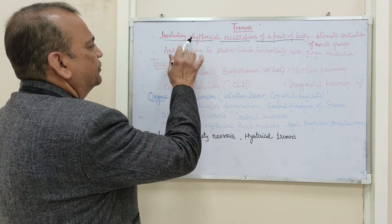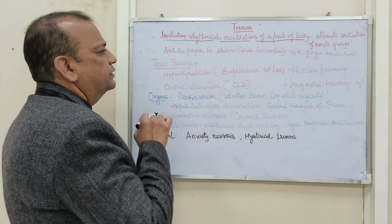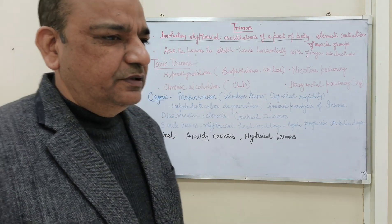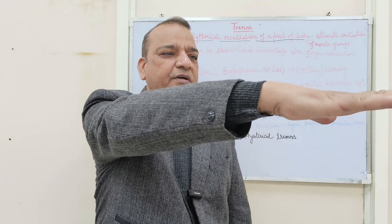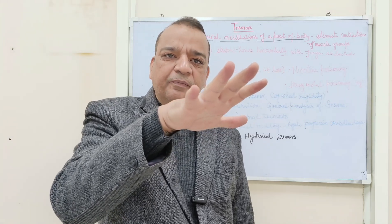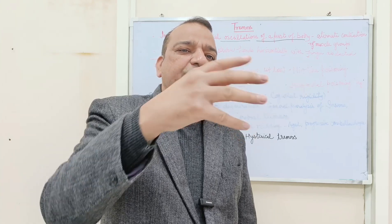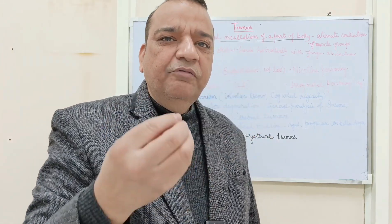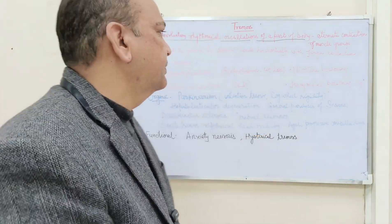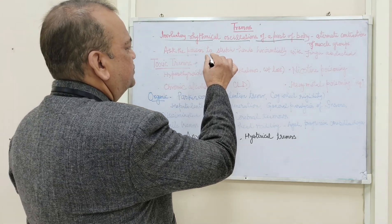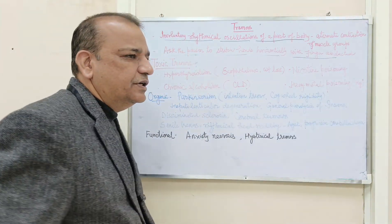Because in the tremor there are involuntary rhythmical oscillations of a part of the body. So, how do you know that a person has tremors? Ask the person to stretch the hand horizontally and keep the fingers open. You will feel the fine tremors. You can feel these tremors in the hands effectively and easily. Ask the person to stretch the hands horizontally with fingers abducted or stretched.